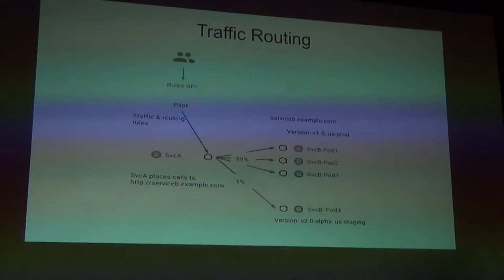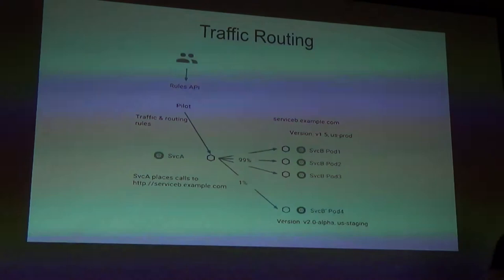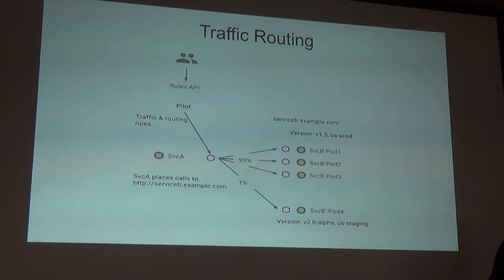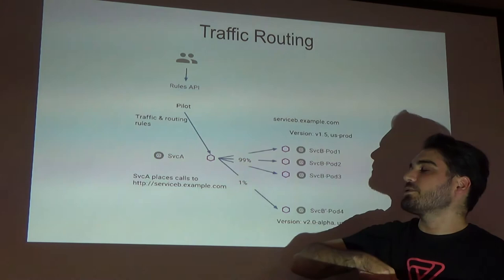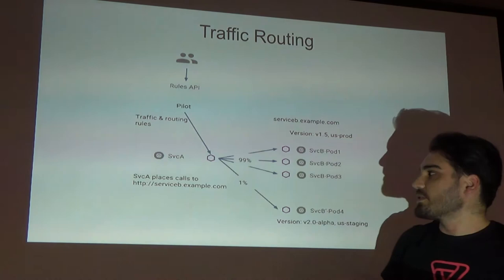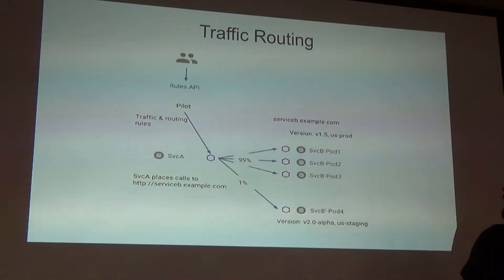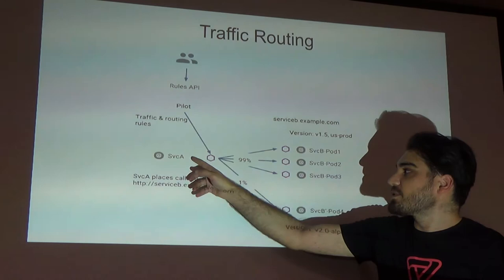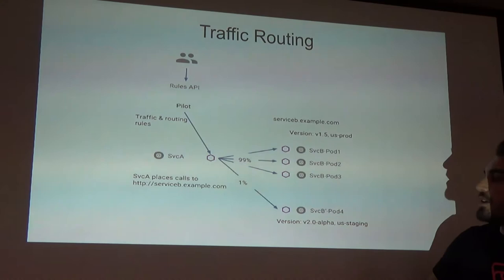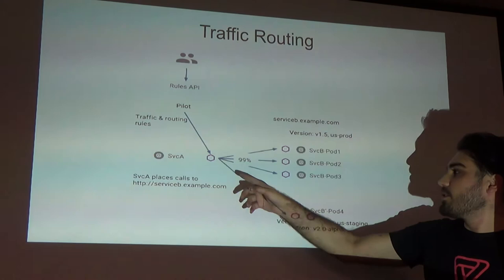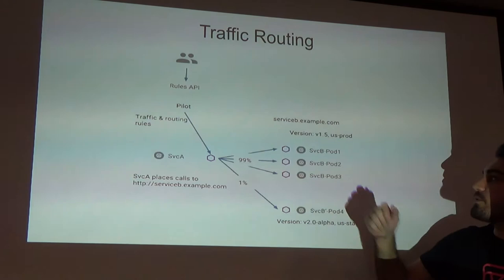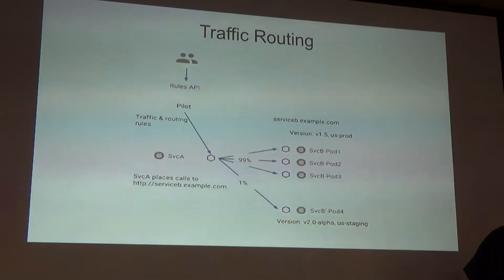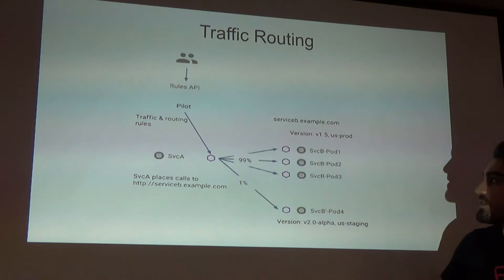Traffic routing is also a key feature for canary releasing, and is the main thing VAMP tries to achieve: you can send messages to different groups of pods with percentages and rates. You send rules to Pilot and Pilot sends them to the proxies. All load balancing is managed on the client side — service A connects directly to the pods of service B, and all of these connections and configurations are managed by the proxy. For example, you can set 1% of traffic to go to a pod with version 2 and 90% to version 1.5.